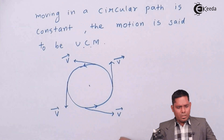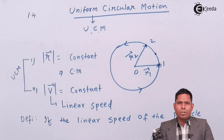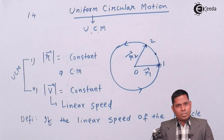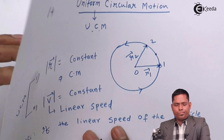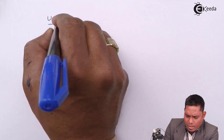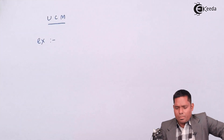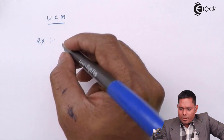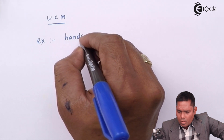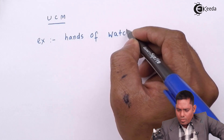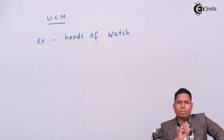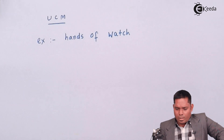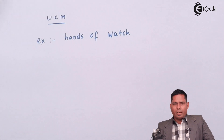Next we will move to the definitions and examples of UCM. Let us take a few examples, then we will define what is time period and frequency of a body in circular motion. An example of UCM is a body moving in a circular path, like the hands of a watch. Whether it is the minute hand, second hand, or hour hand, it is moving at constant speed, covering equal angles in equal time.